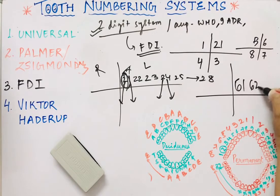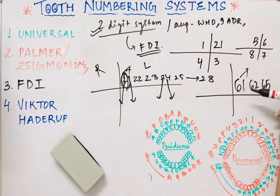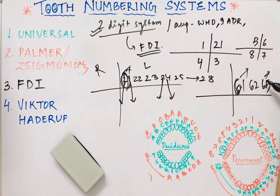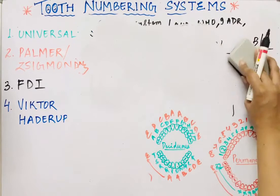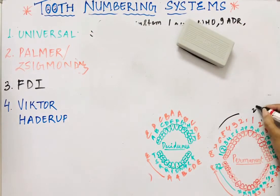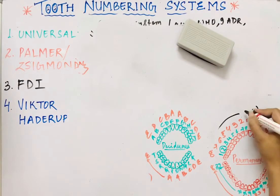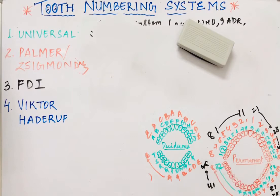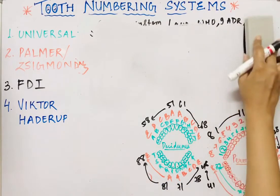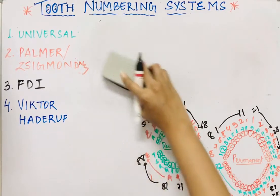For primary dentition in FDI, the numbering uses quadrants 5 to 8. So '6, 1' is the maxillary left deciduous central incisor, and '6, 5' is the deciduous maxillary left second molar. For permanent dentition: quadrant 1 goes from 1,1 to 1,8; quadrant 2 from 2,1 to 2,8; quadrant 3 from 3,1 to 3,8; quadrant 4 from 4,1 to 4,8. Always remember: the quadrant number is written first (on the left), and then the tooth number is written on the right.